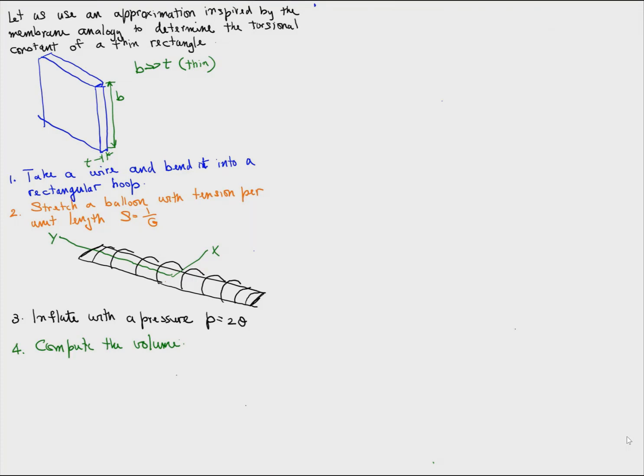Now we proceed to compute the volume because twice this volume will give us the torque. Since B is much larger than T, far enough from the ends the slope along the y direction is zero. So the Poisson's equation satisfied by the membrane deflection reduces to d squared U by dx squared equals minus P over S, which is minus 2 G theta.